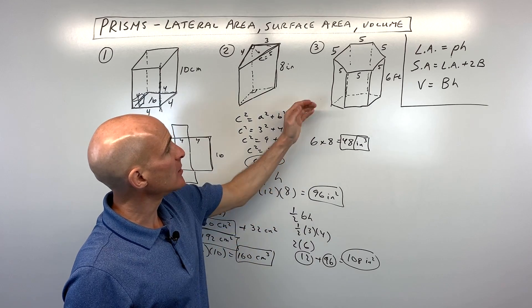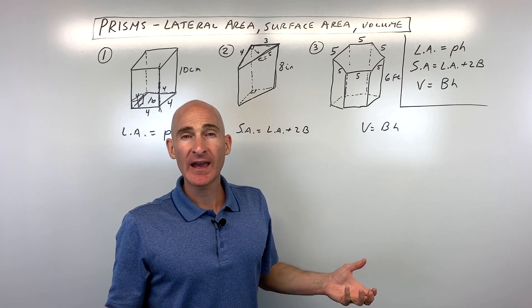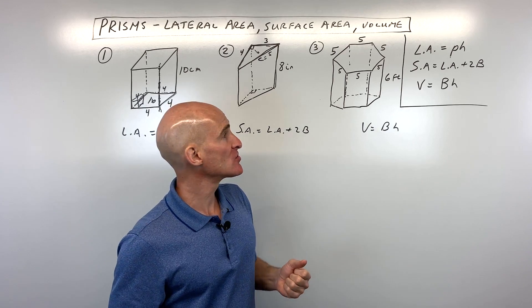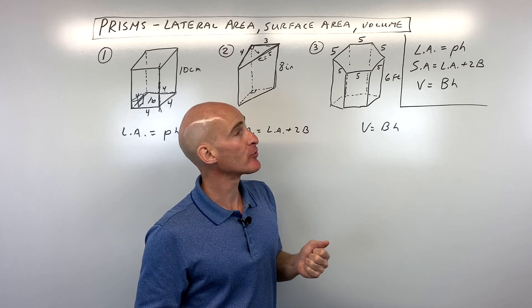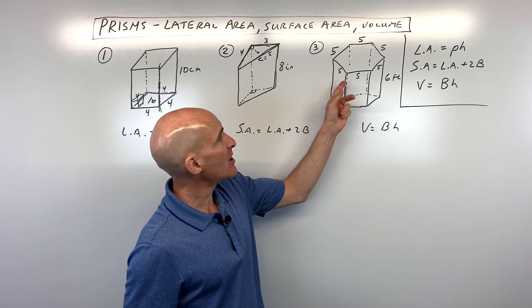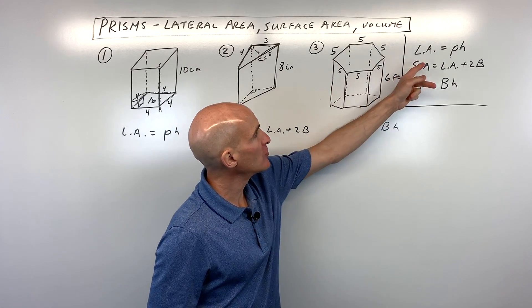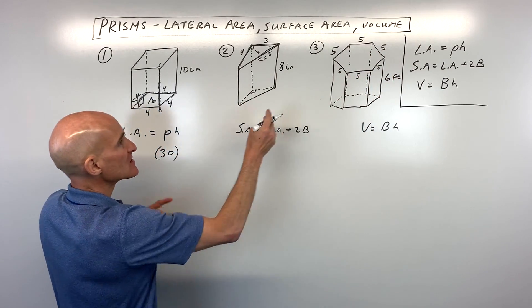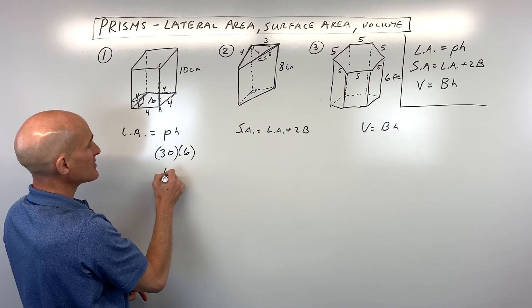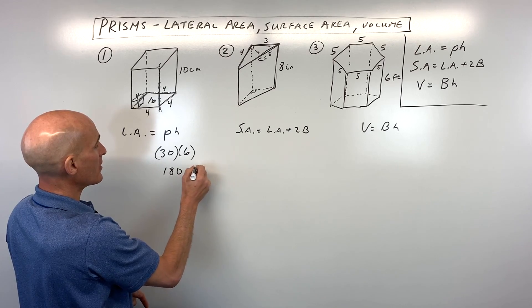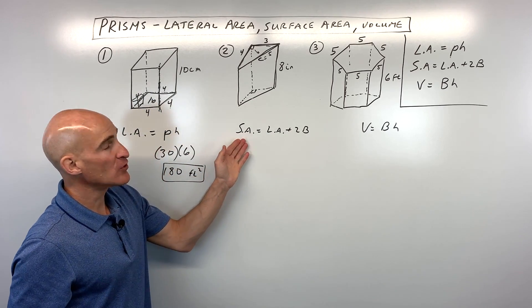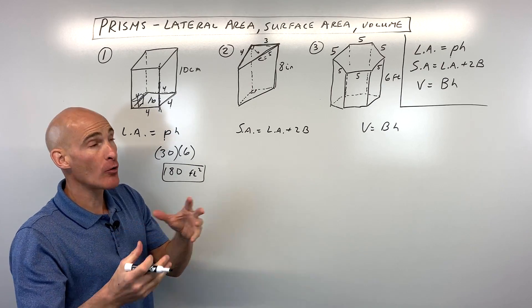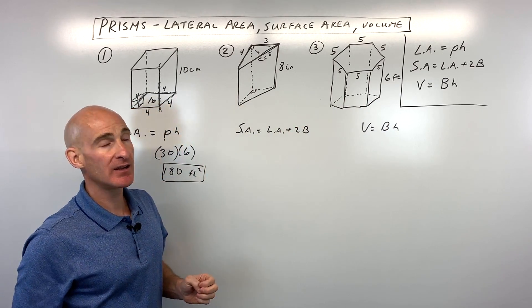Now let's look at number three — a hexagonal prism, a little more challenging. You could find the area of each face and add them up, or use formulas — either way you get the same result. For the lateral area: the perimeter is 5 times 6 sides, which is 30, times the height of 6 between the two hexagons, giving 180 feet squared. Writing down the formula first and then filling in values keeps things organized.